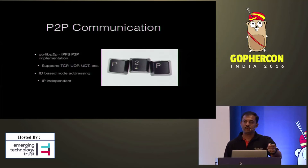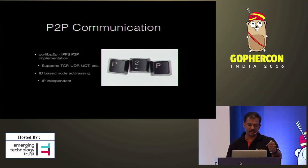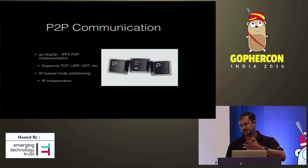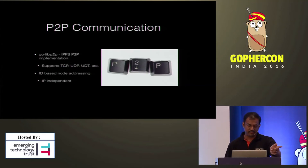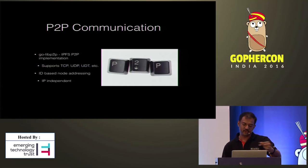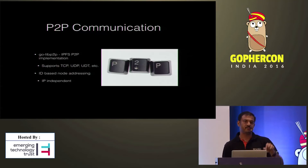In this P2P communication, nodes are addressed by their ID. This allows machines or nodes to move from one network to another without affecting their identity. If you are using IP addresses, it's going to change whenever we move from one network to another. But in IPFS, since we are using IDs, it's not going to be affected.